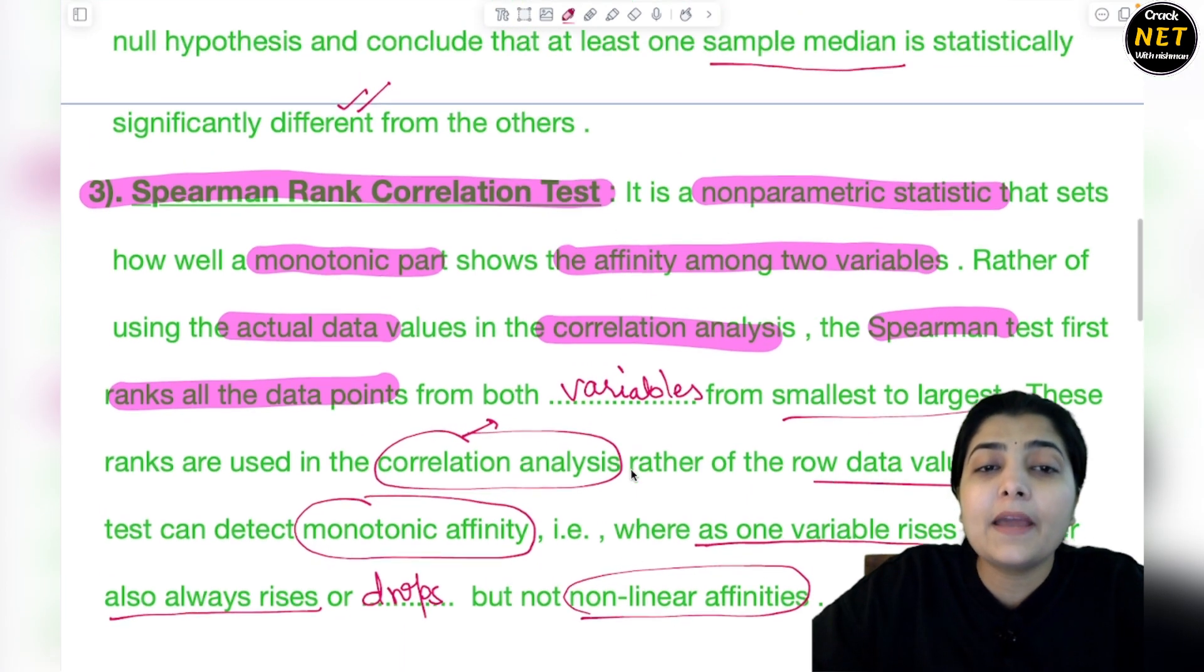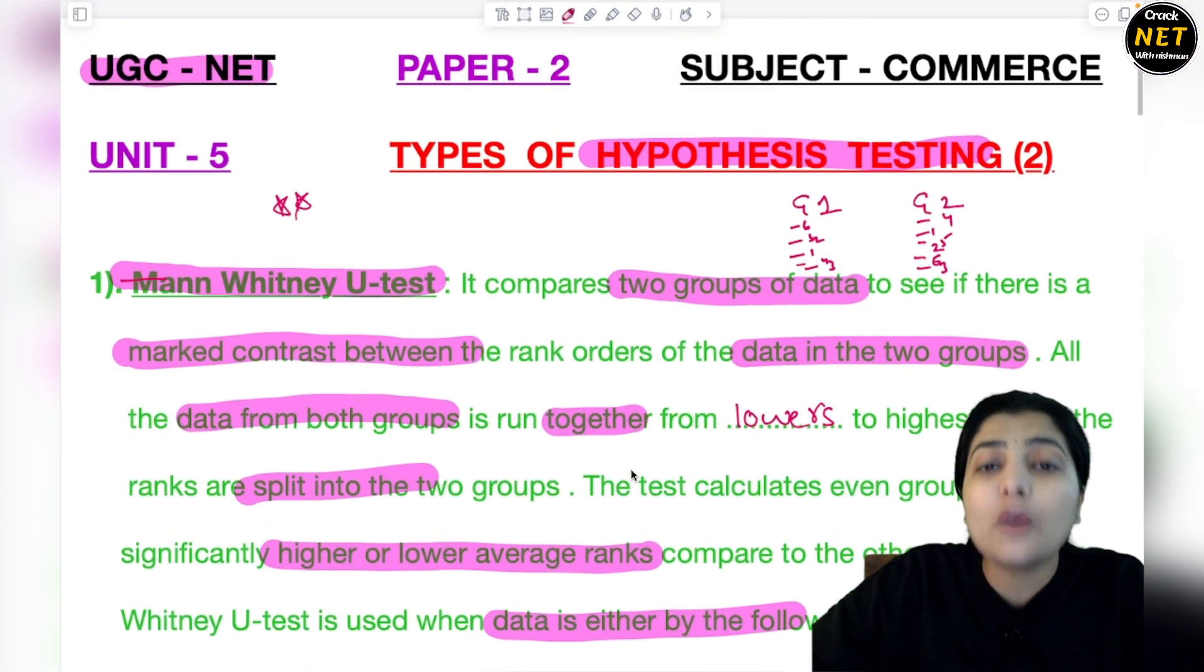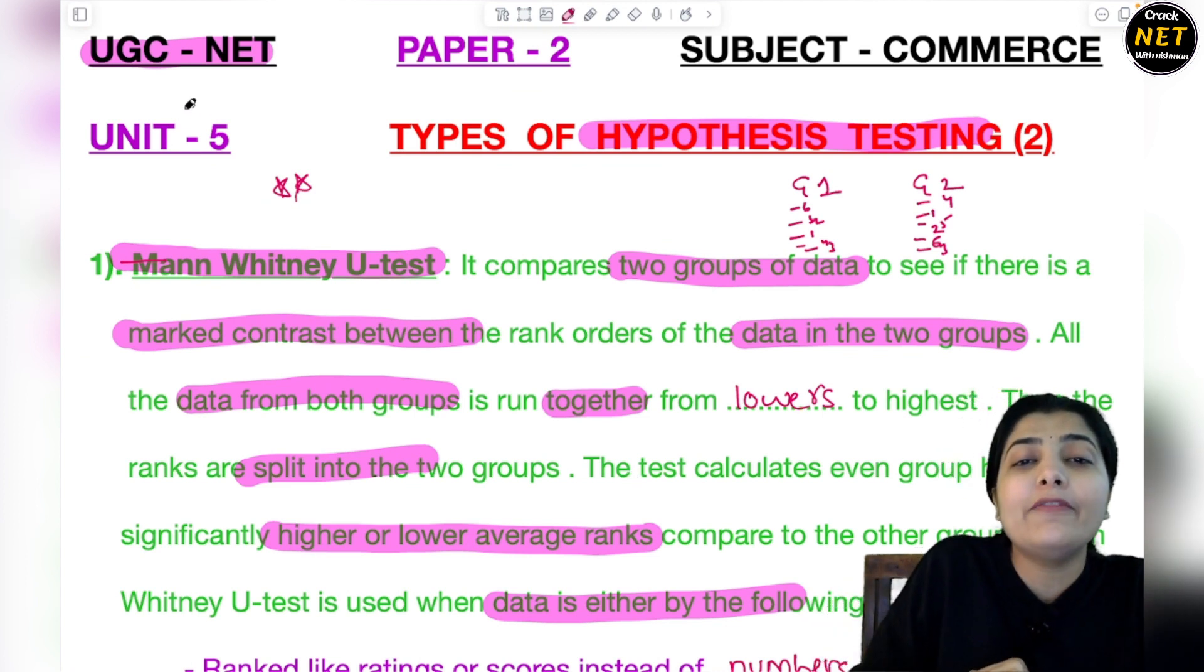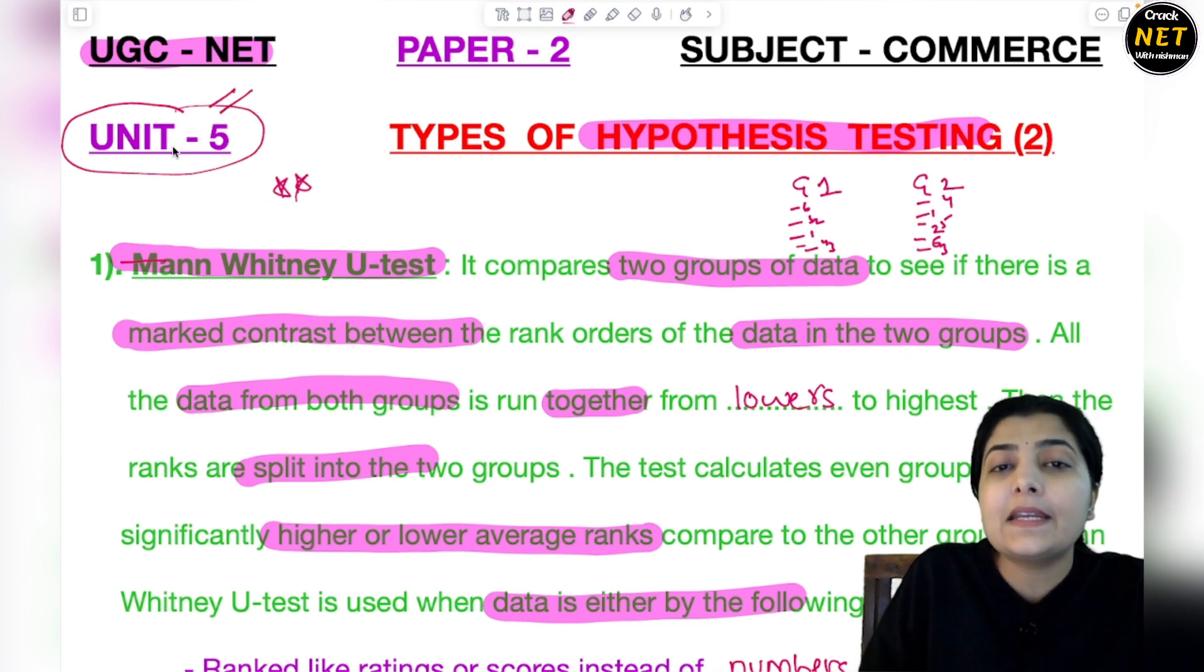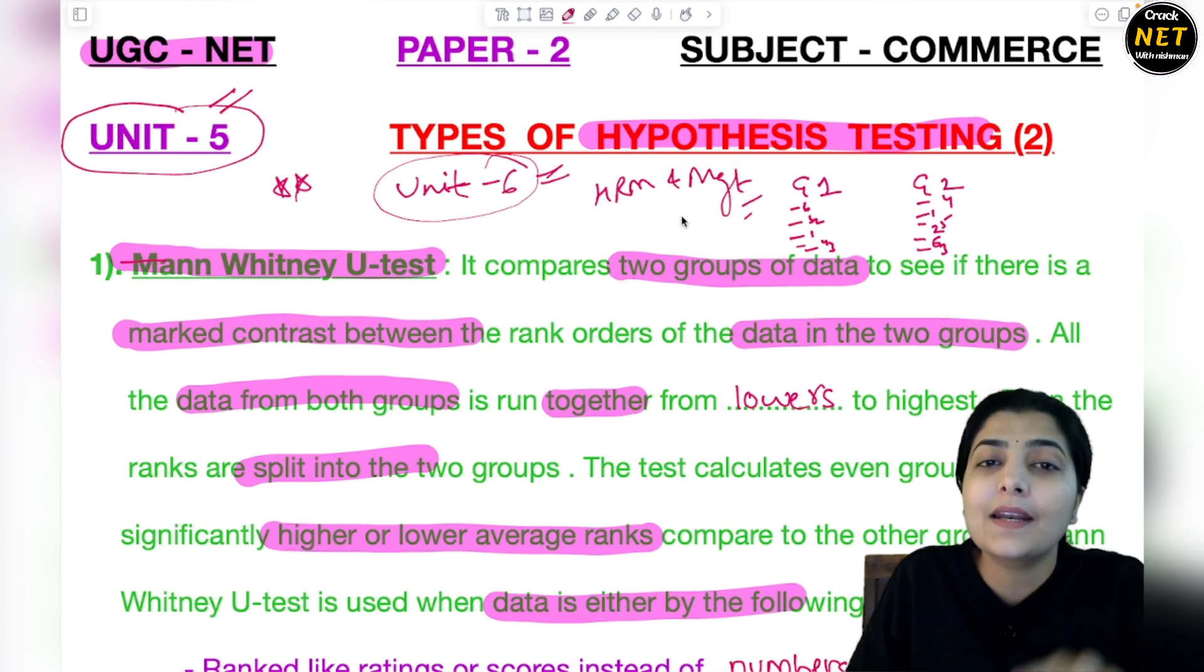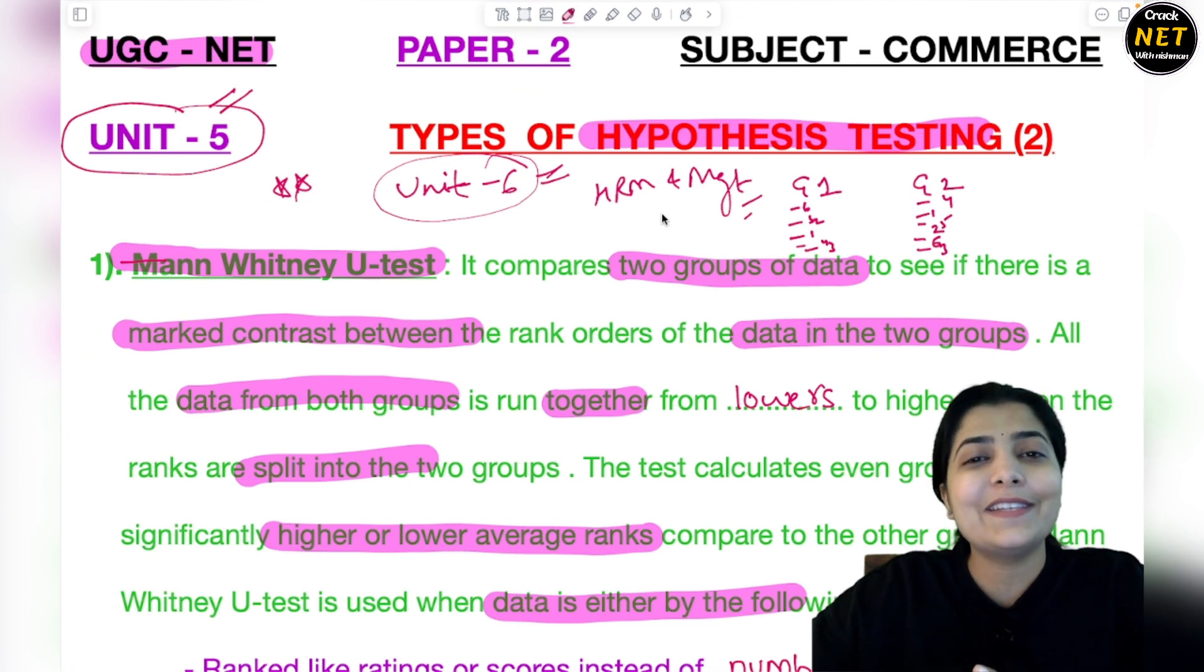That's the Spearman Rank Correlation Test, Kruskal Wallis Test, and the Mann Whitney U-test. I hope you enjoyed this session and understood every point. With this we completed unit 5 in detail - a very important unit on business statistics. Now moving to unit 6 in the next session, which will be about business management and HRM. Don't skip it. The PDF of this session on hypothesis testing is available on Telegram. Stay tuned for the next session. Till then, have a good day, thank you.